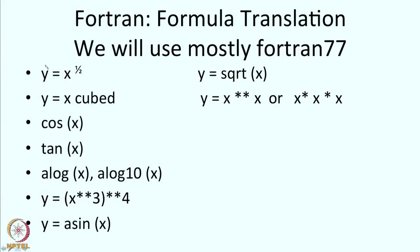Fortran stands for formula translation. We will be using mostly Fortran 77. In mathematics you write y equals x to the power of half, but in a program the entire expression must be on one line — no superscripts or subscripts. So that expression is written as y equals sqrt(x). Similarly, y equals x cubed is written as y = x**3, where double star means raising to a power. Another way is x*x*x. There are certain differences between x**x and x**3 which we will come to later.